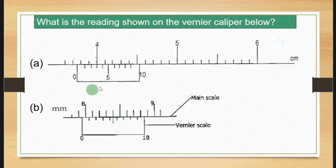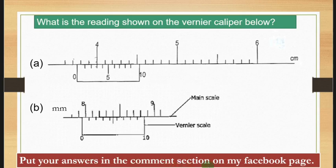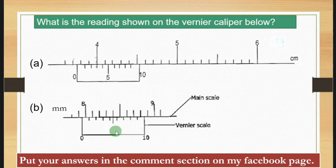So the practice work asks: what is the reading shown on the Vernier caliper below? You have caliper A in centimeters and caliper B in millimeters. Go to the Facebook search button, search the DMS Online School, follow and like my page. I'll post this question this week — put your answers in the comment section of that post and I'll reply to tell you whether your answers are correct. Bye guys, see you on my Facebook page, peace!